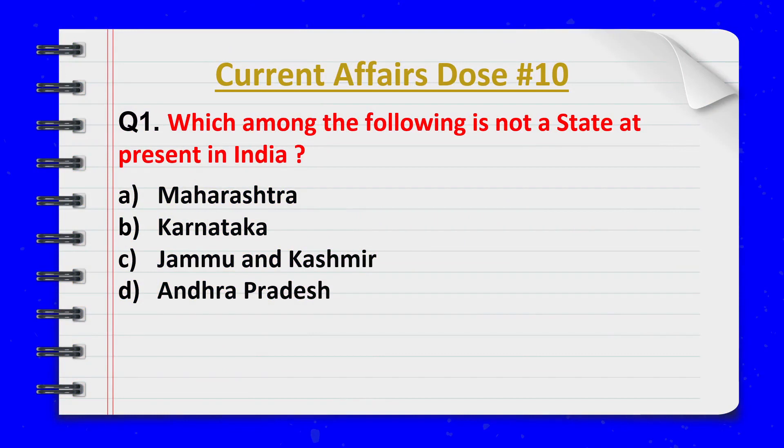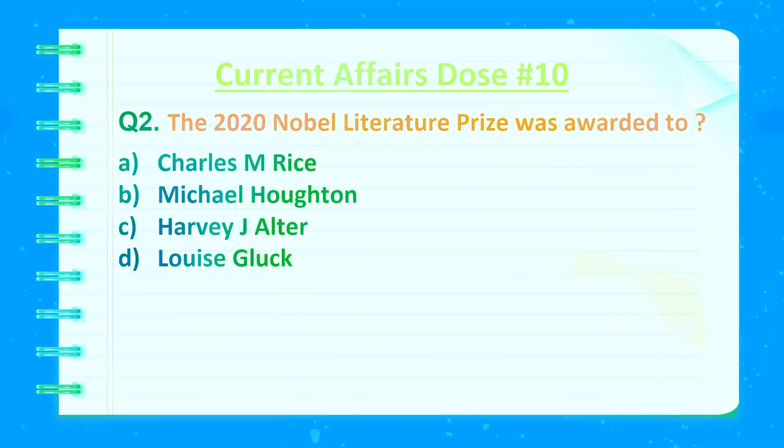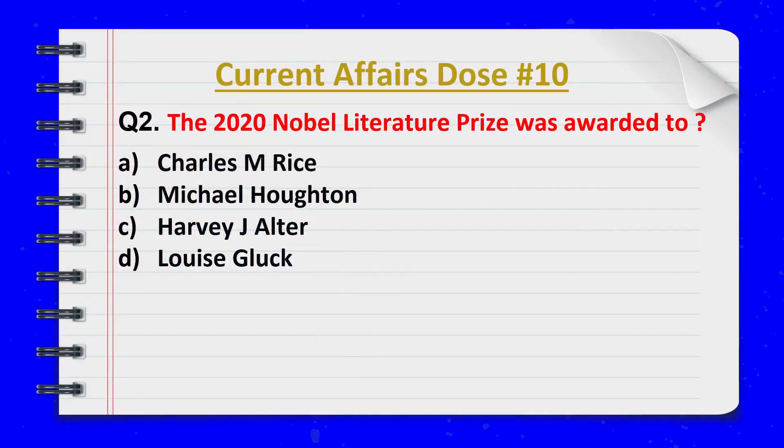Question 1. Which among the following is not a state at present in India? Correct answer: option number C — Jammu and Kashmir.